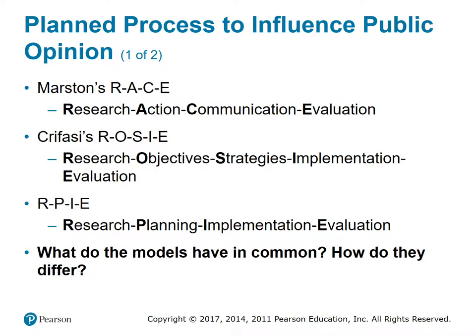The planned process to influence public opinion: Marston's RACE - Research, Action, Communication, and Evaluation. Cutlip's ROSIE - R-O-S-I-E: Research, Objectives, Strategies, Implementation, and Evaluation. R-P-I-E: Research, Planning, Implementation, and Evaluation. Ro-Sheila Clow proposed extending the RACE formula into the five-part ROSIE to encompass a more managerial approach to the field. ROSIE prescribed sandwiching the functions of objectives, strategies, and implementation between research and evaluation. Setting clear objectives, working from strategies, and implementing a predetermined plan are keys to sound public relations practice. RPIE emphasizes the element of planning as a necessary step preceding activation of a communications narrative.